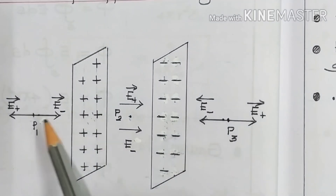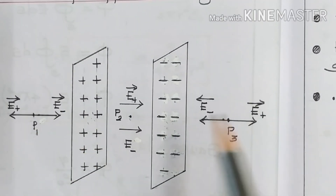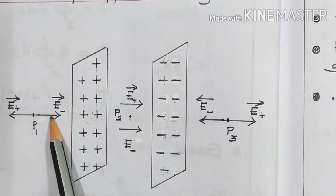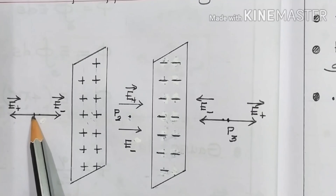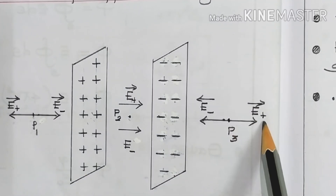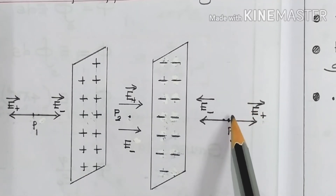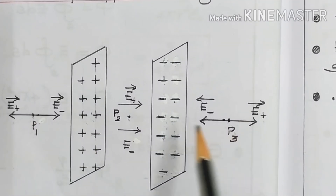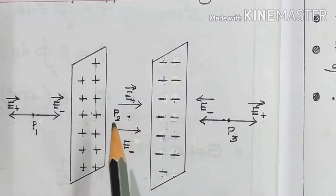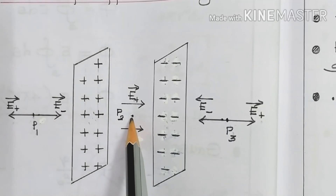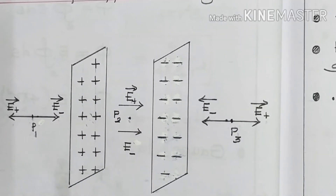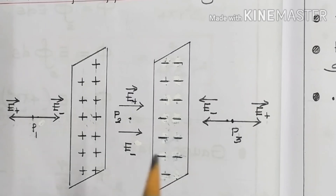At points P1 and P3, the electric fields due to the two sheets are equal in magnitude but opposite in direction, so they get cancelled. Therefore the electric field at P1 and P3 is zero. We have a non-zero electric field only at points lying in between the two sheets. Now let us proceed to the derivation.